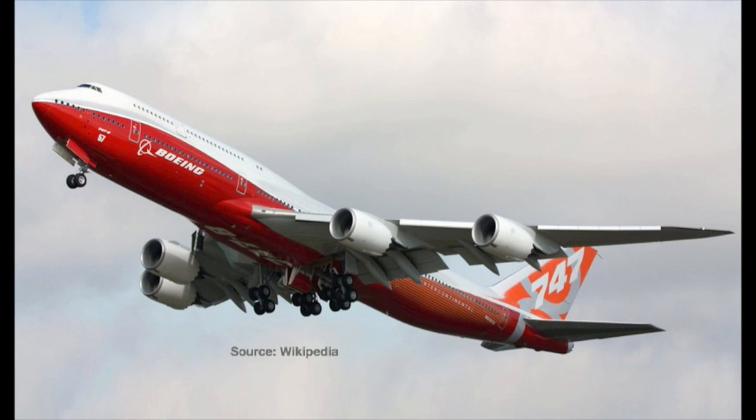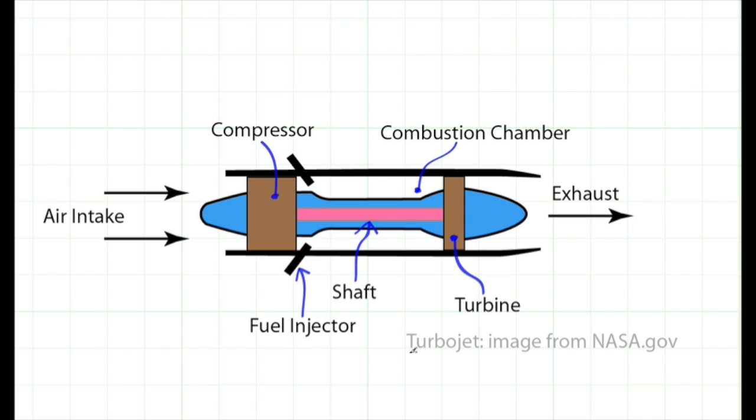This picture is a Boeing 747, typical of the kind of things that engineers design. Let's focus on one of the jet engines.